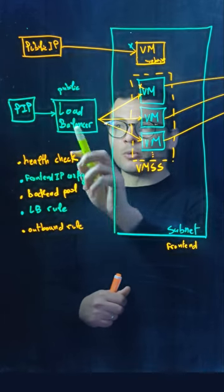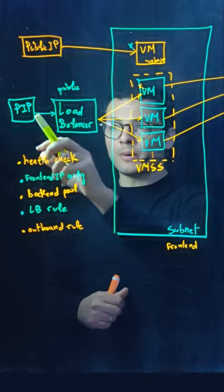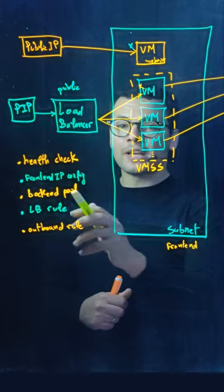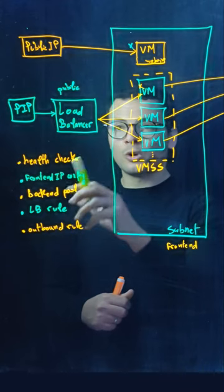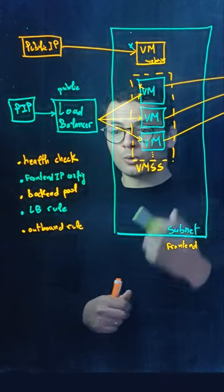And then it will use frontend IP configuration to link the public IP address, backend pool to attach to the virtual machines where to send the traffic, and then a load balancer rule to orchestrate all of those rules together.